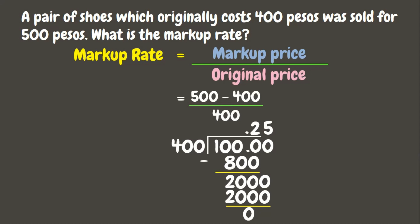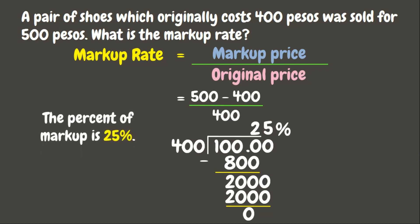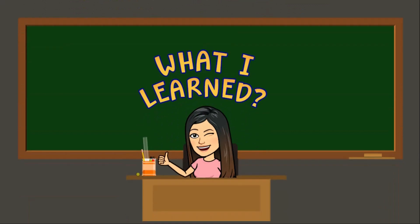But since we are looking for the rate, we need to change this into a percent. To change decimal into percent, we move the decimal point two times to the right — one, two — and finally change the decimal point into a percent sign. Our final answer is the percent markup is 25 percent. Wonderful, great job students! Now here are the things that you learned today.